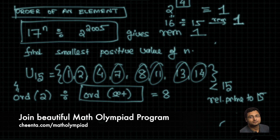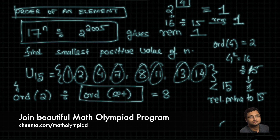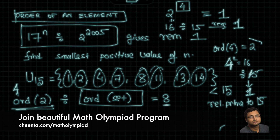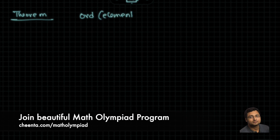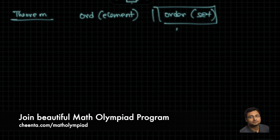The order of 4 is 2, because 4 squared is 16, and if you divide it by 15 the remainder is 1, so 4 squared is congruent to 1. Our main theorem, which we will not prove here because it can be proved number theoretically but we prefer the group theoretic proof, is: the order of an element divides the order of the set — that is, the cardinality of the set.